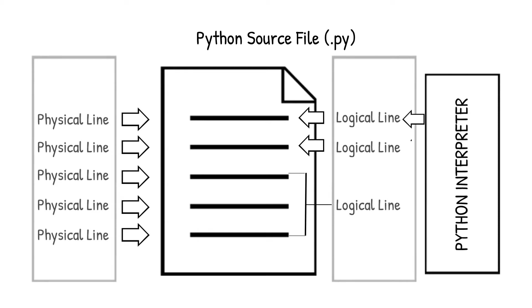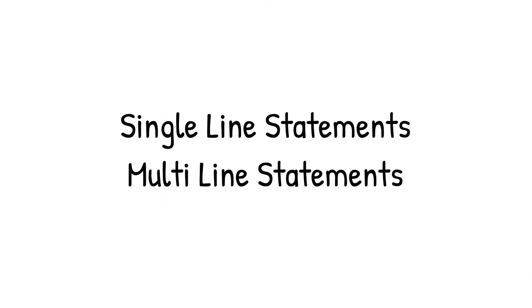After converting each physical line into logical lines, the Python interpreter reads the instructions and executes them. These logical lines are known as Python statements. By default, the Python interpreter considers every single physical line as a logical line, but with multi-line statements, multiple physical lines can be bundled together as a single logical line.